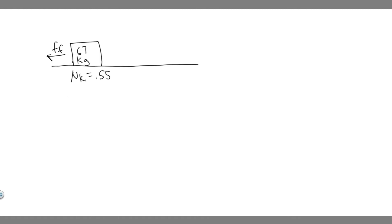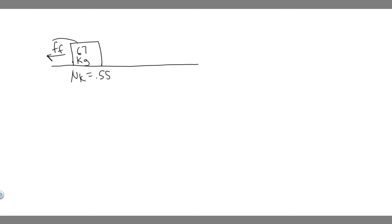So what we have here is this box. We know the coefficient of kinetic friction is 0.55, mass is 67 kilograms, and there's going to be a force of friction going in the opposite direction. For Part A, we're trying to find the power needed to push the box at 0.5 meters per second.